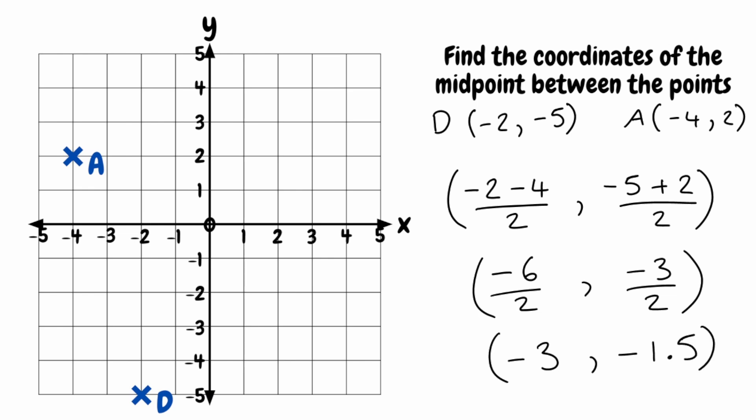And that would be the coordinates of our midpoint. We can plot this on the grid: negative 3 in the x direction and negative 1.5 in the y direction, so it would go there.